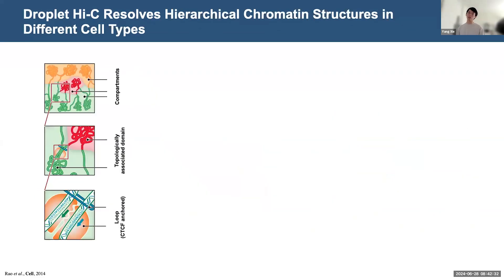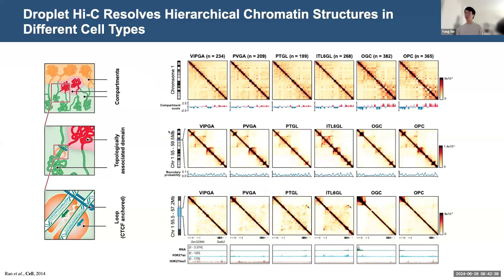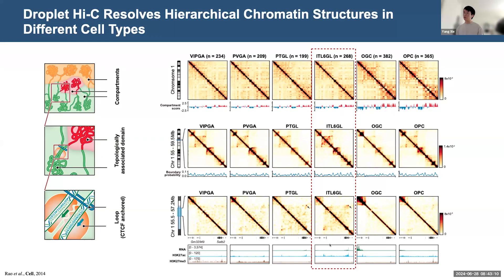Focusing on six subclasses with similar cell numbers, we wondered whether Droplet Hi-C can reveal hierarchical chromatin structure at the cell type level. We achieved this by showing the contact map at the whole chromosome at 100 kb resolution, at the domain structure at 25 kb resolution, and the chromatin loop at 10 kb resolution surrounding the region for the gene Satb2, which is active specifically in the excitatory neuron subtype, like the layer 6 IT neurons. The activity of this gene is supported by public single-nucleus RNA-seq and epigenetic data.